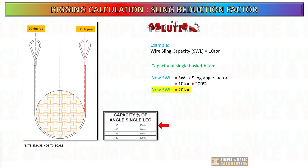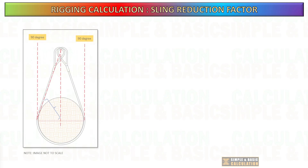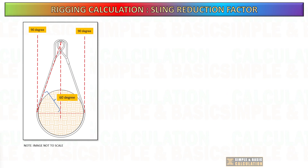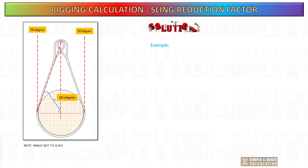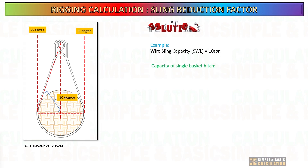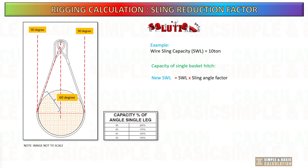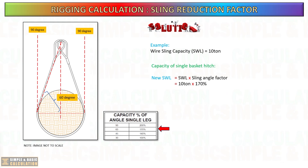When the sling leg is in a vertical position, the safe working load (SWL) of the sling is doubled. Next, how about when the sling is bent over the load? Consider the sling is bent and forms an angle of 60 degrees. Due to the angle formed on the sling, the capacity of the sling is reduced to 170 percent, compared to 200 percent at a 90 degree angle.